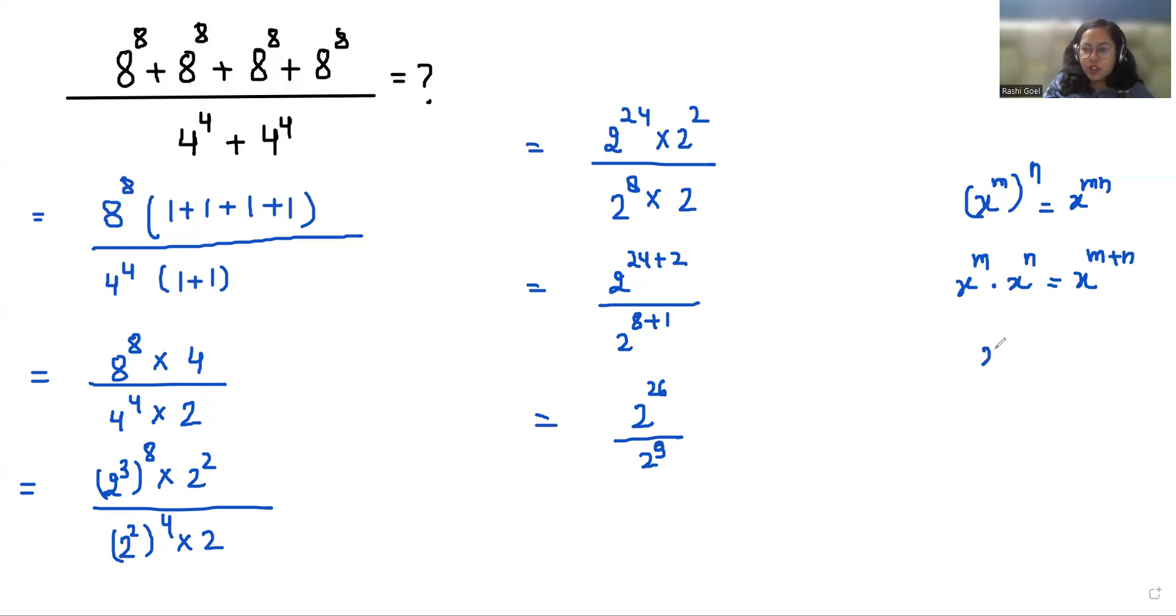According to exponent rule x power m by x power n, we can write this x power m minus n. So 2 power 26 minus 9 which is equal to 2 power 17. So our final answer is 2 power 17 for this.